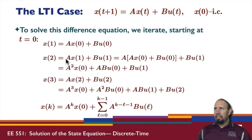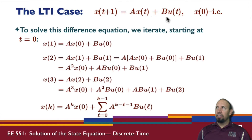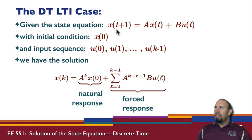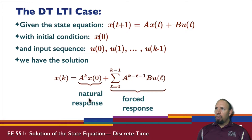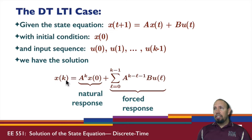In the discrete-time state model, we can explicitly and fairly simply obtain the solution to the difference equation. Given the state equation, an initial state, and an input sequence from time 0 up to k minus 1, the first term is called the natural response — the response of the system when there is no input, that is, when you have a nonzero initial condition only.